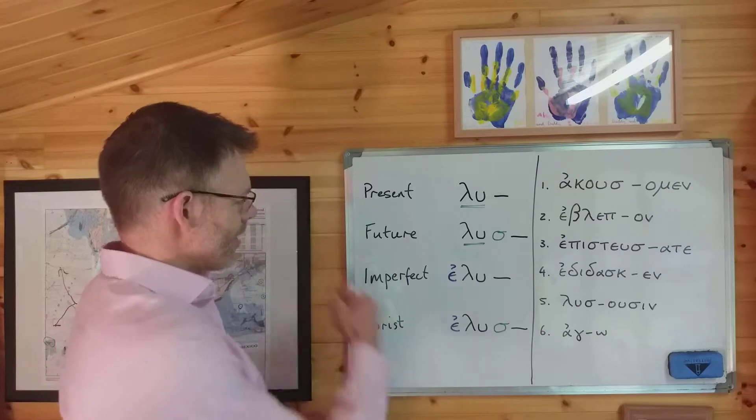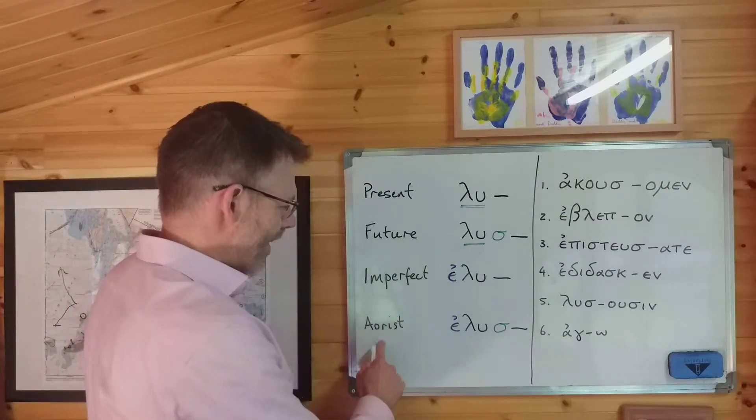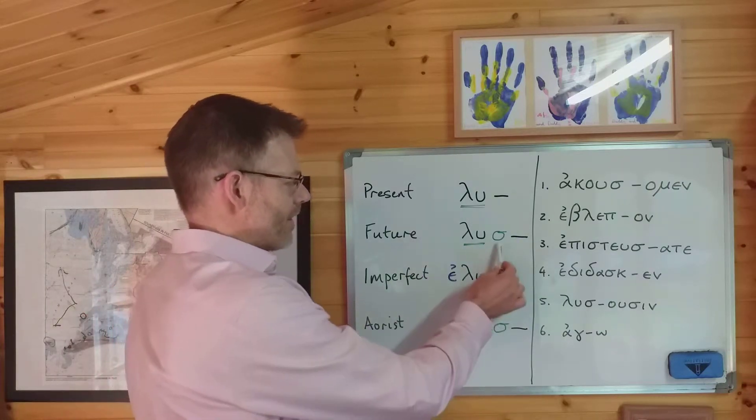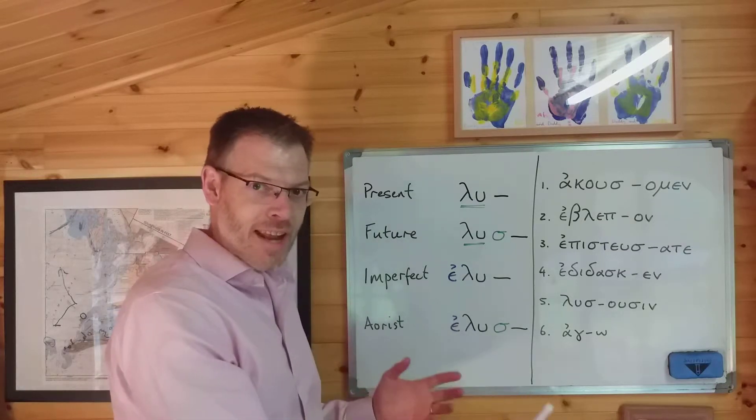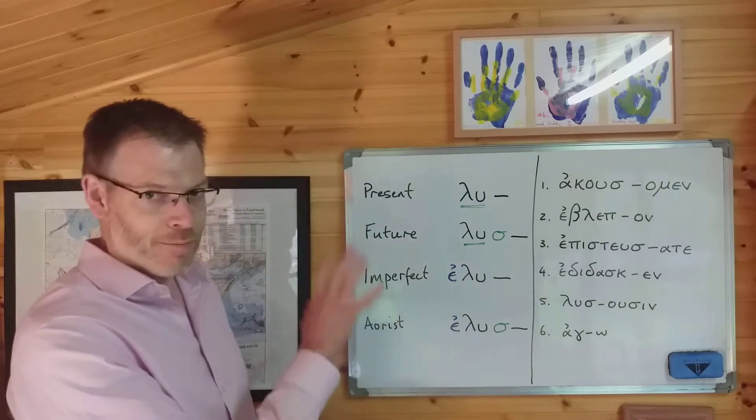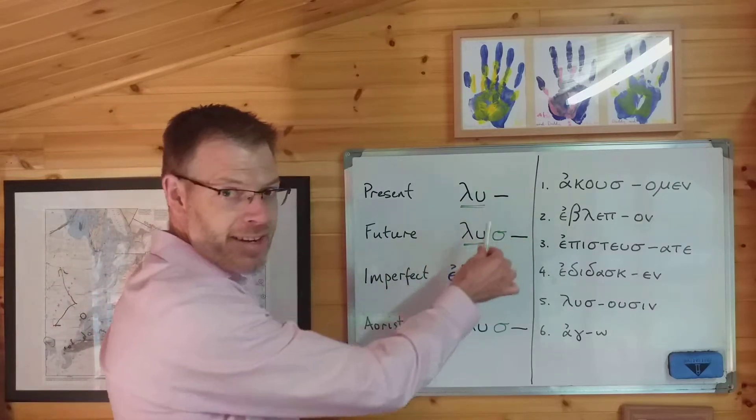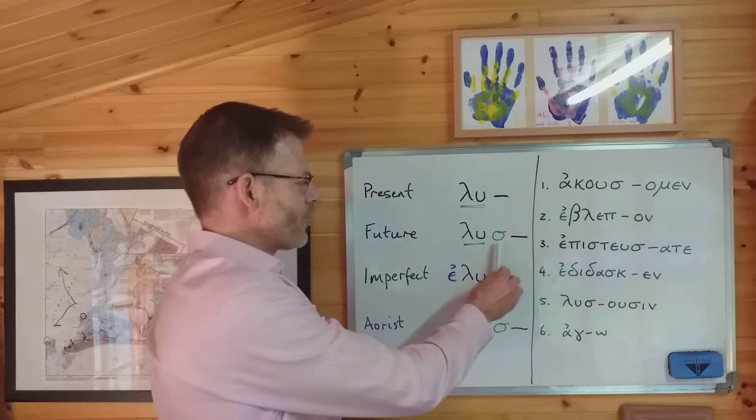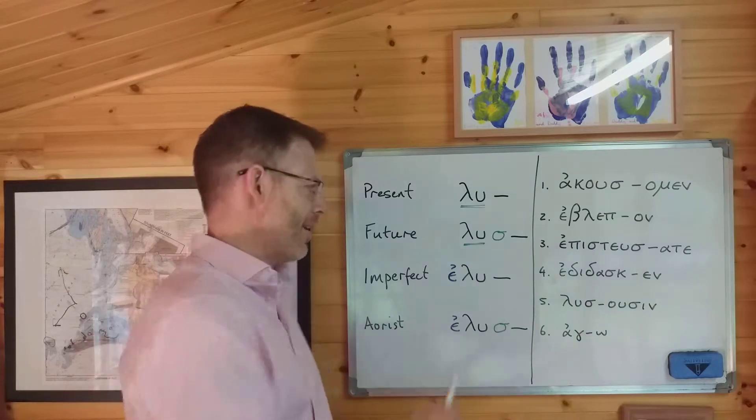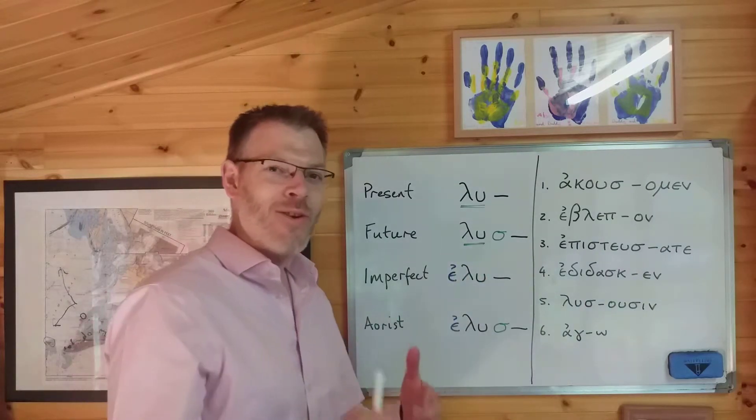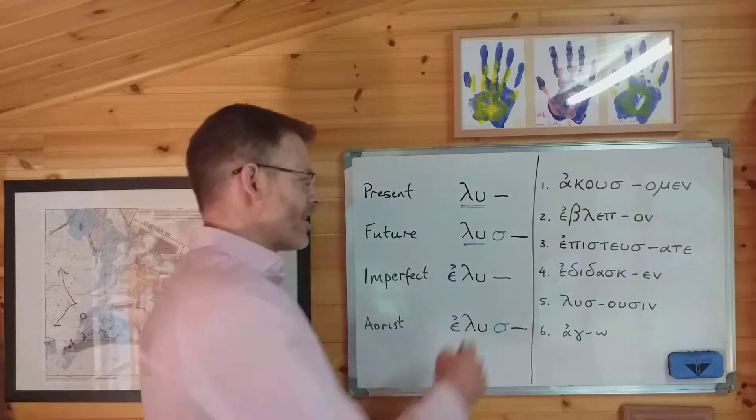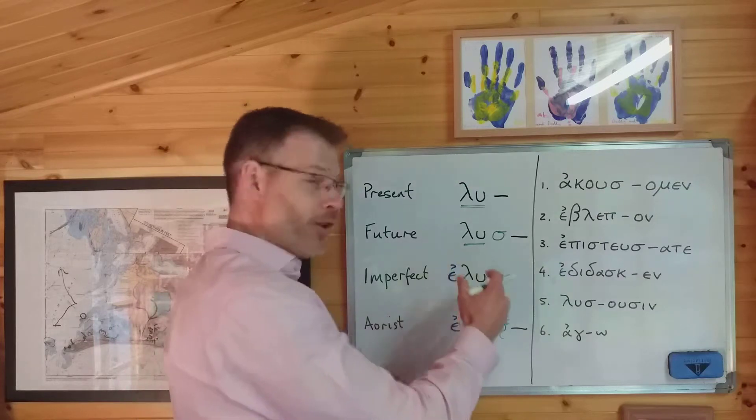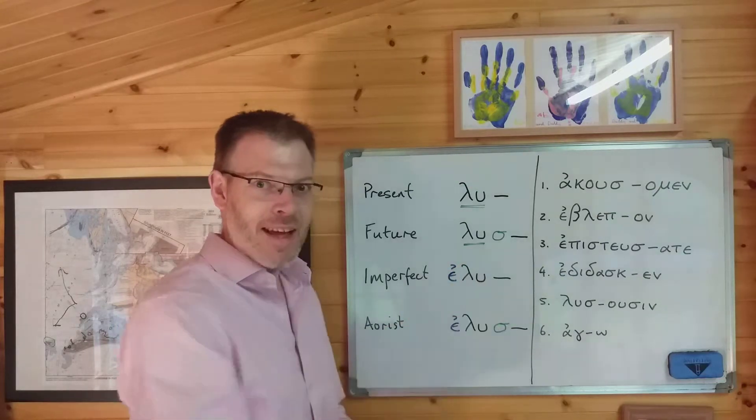But there is one other way, and this is the crucial, central, first port of call way that we need to get used to telling the difference. You notice that the future and the imperfect and the aorist have extra letters added either before or after, or before and after the stem. Look carefully at the diagrams. The future has the stem and then a sigma and then the ending. This is called a sigma suffix.